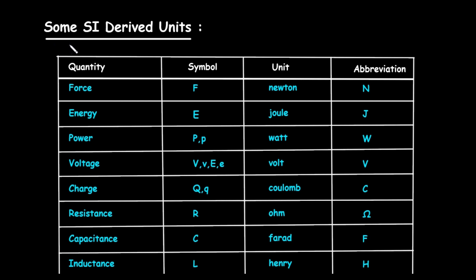In this video, we will see some SI derived units. The first column represents quantity, the second column represents symbol, the third column represents unit, and the fourth column represents abbreviation.